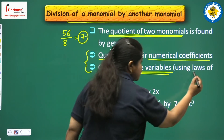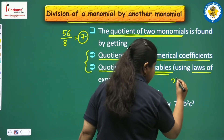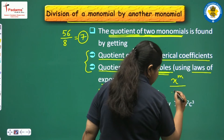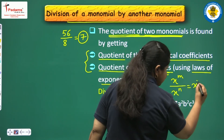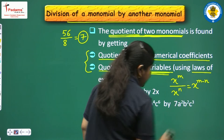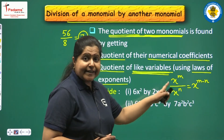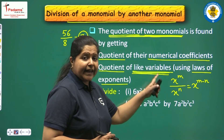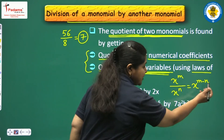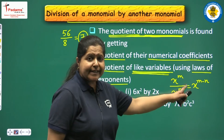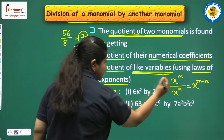We use laws of exponents. We know that if x raised to power m is divided by x raised to power n, then this is equal to x raised to power m minus n. Here the base is the same and the exponents are different. As we divide, the exponents get subtracted. This is the law of exponents used to divide like variables.